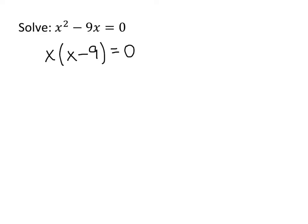But there aren't too many ways that we can multiply two numbers together and get an answer of 0. In fact, the only way to multiply two numbers together and get 0 is if one of those two numbers is 0. So the only way this can be true is if x is 0 or x minus 9 is 0.